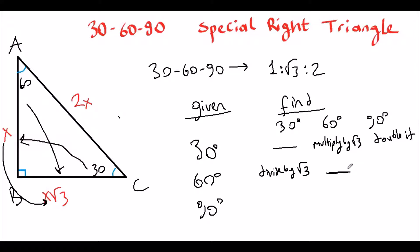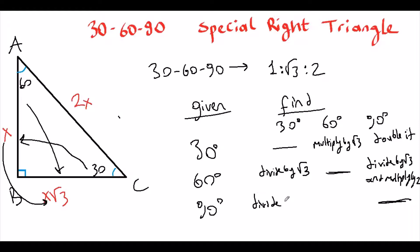Given the 60° side, we can do a two-step operation: first divide by √3 to find across 30°, then double it to find the hypotenuse. Given the hypotenuse (90°), divide by 2 to find across 30°, then divide by 2 and multiply by √3 to find across 60°.